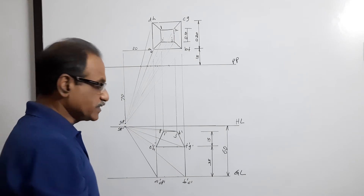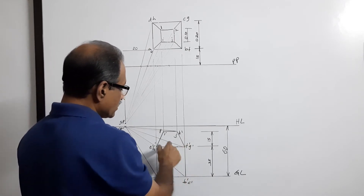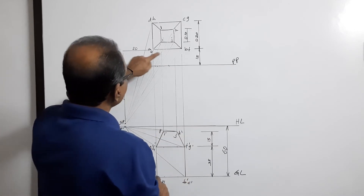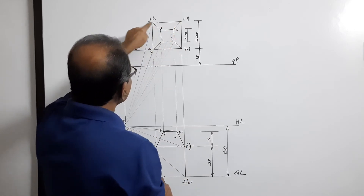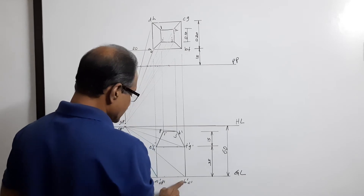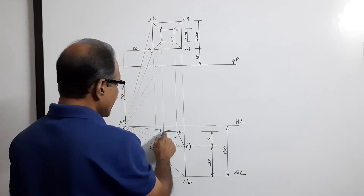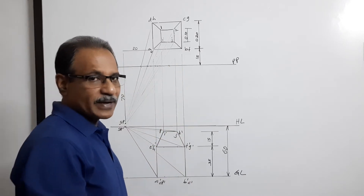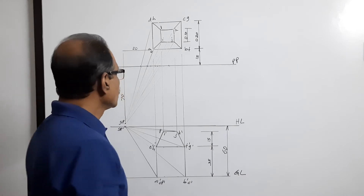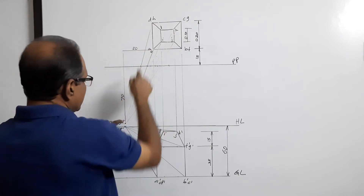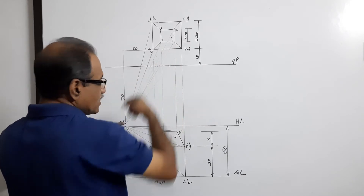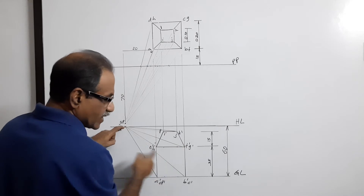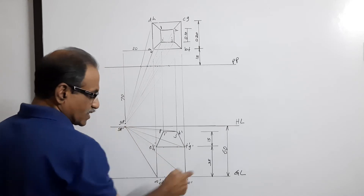Project vertically down and draw the elevation of the combined object. You have a ground line, 35mm height for the prism part, and 15mm height for the frustum part, with a 10mm square at top. Label elevation points a-dash, b-dash, c-dash, d-dash through l-dash. Now join all points of the plan to SP with light lines, and join all points of the elevation to SP-dash with horizontal lines connecting them.